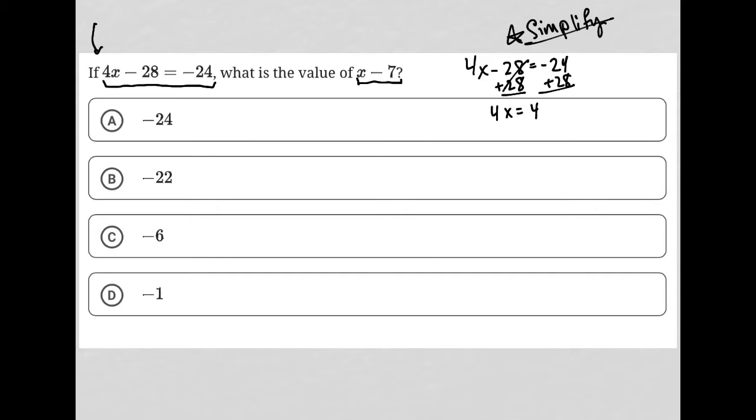Negative 24 plus 28 is 4. I can then divide both sides here by 4, and I'd have x is equal to 1.